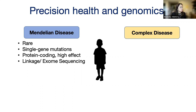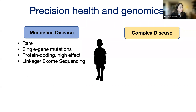For Mendelian disorders, I think about them as rare. They're due to single gene mutations — a single gene with a mutation in one or both copies. These mutations are most often in genes that encode proteins. If a gene encodes a transcript of RNA and that protein becomes the functional building block active in the cell, that mutation in the protein has a really high effect, meaning that if you have that mutation, you will see some clinical phenotype in the individual, in the cell, in the tissue.